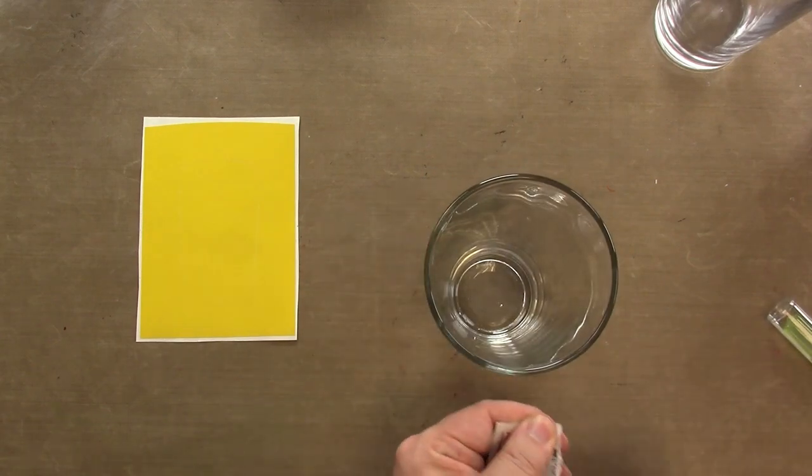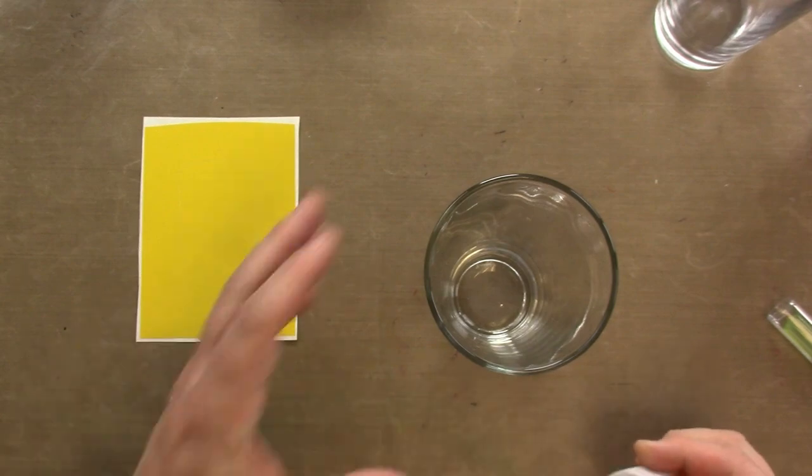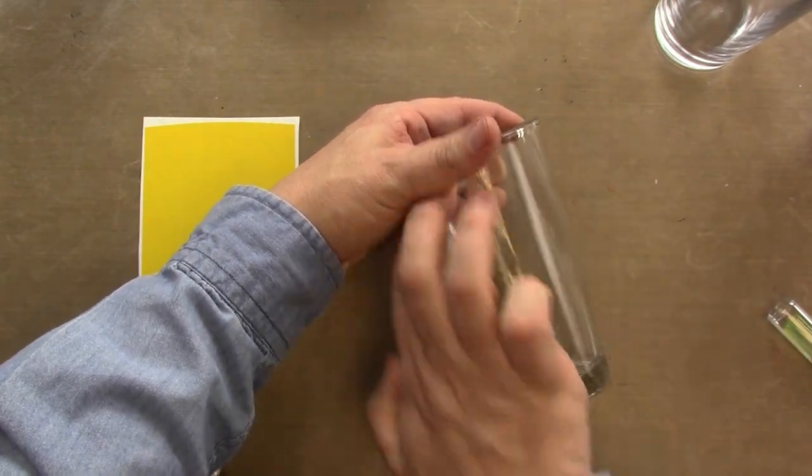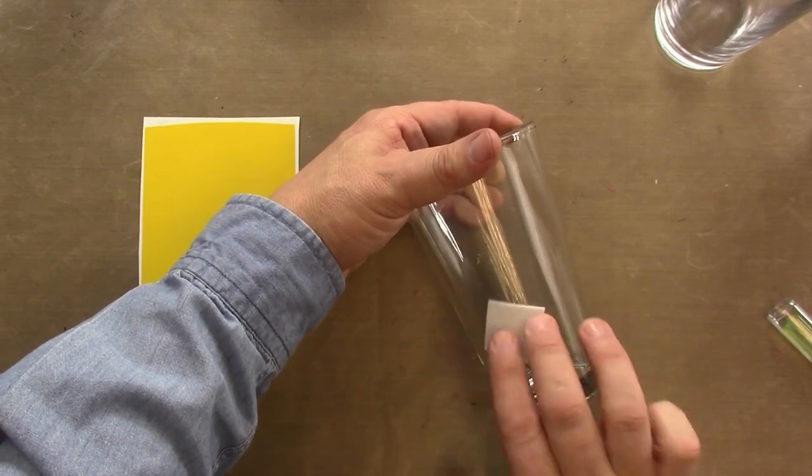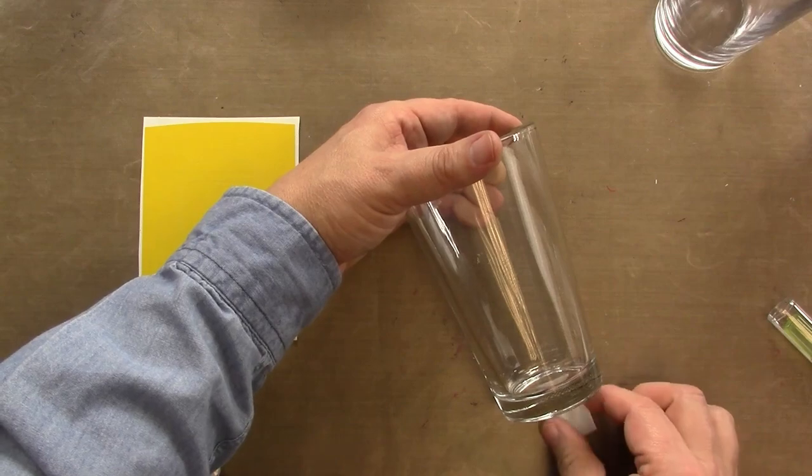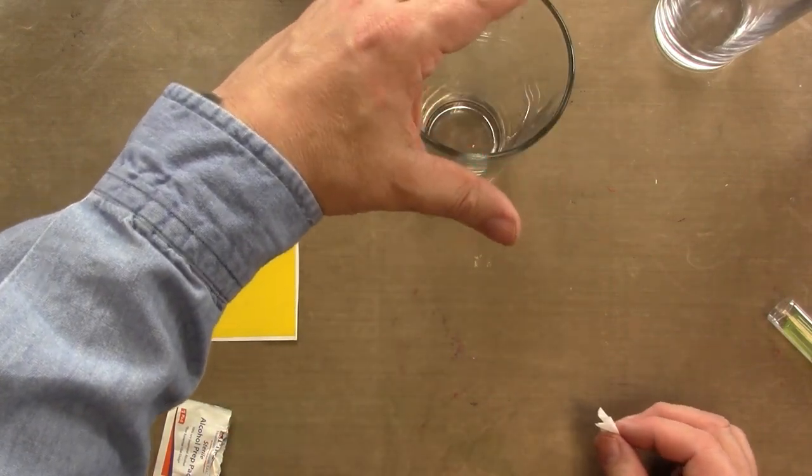I like to wash them, wipe them down, and then I typically use a little alcohol wipe just to make sure that I don't have any oil or grease from my hands on the piece of glass. So we'll let that dry a second.